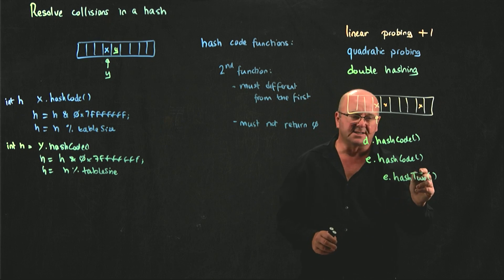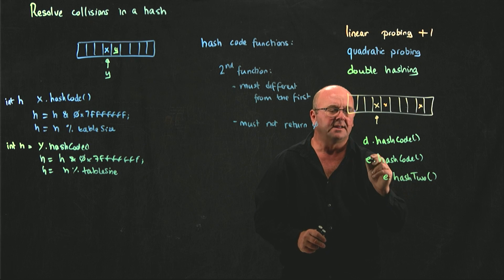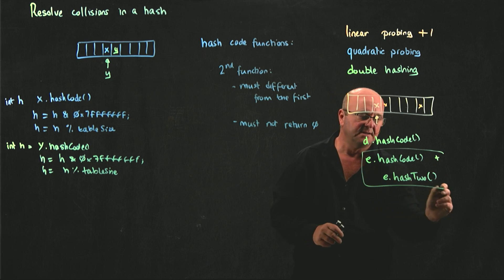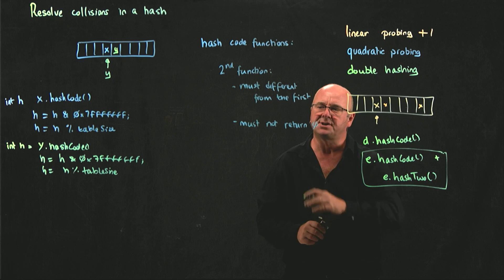We call our second hash code function, that gives us a new integer,